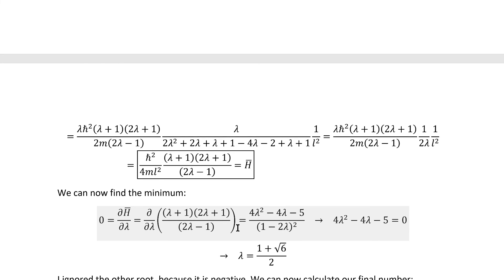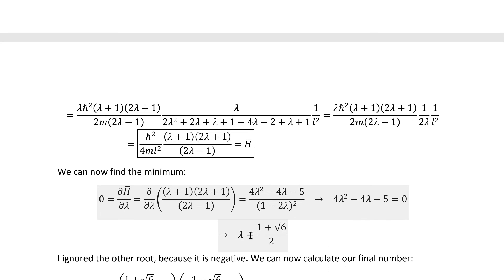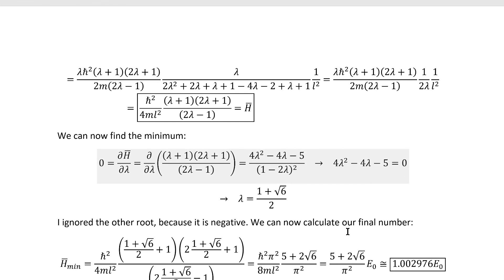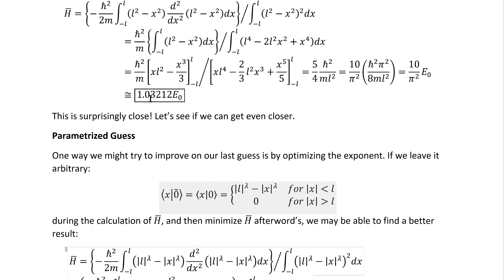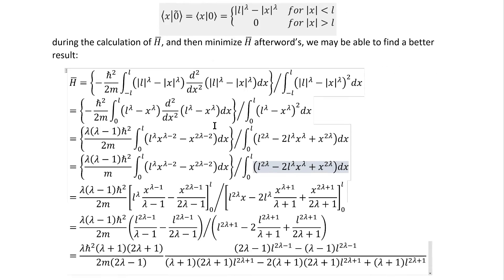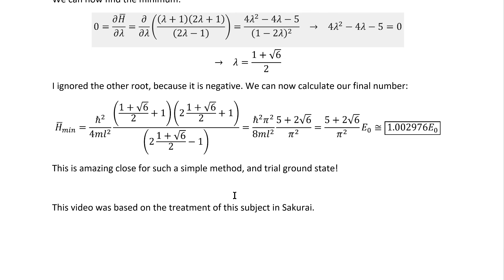We can then calculate the minimum by zeroing the derivative, as you usually do in calculus. We find an equation which has two zeros, the only positive one of which gives us the optimal exponent. Inserting that into h-bar gives the minimum value, and we've pushed the difference from the true energy down by almost exactly one decimal place. This is amazingly close for such a simple technique and still a pretty simple guess. You now understand the variational method for calculating an upper bound on the energy of the ground state of a quantum system.